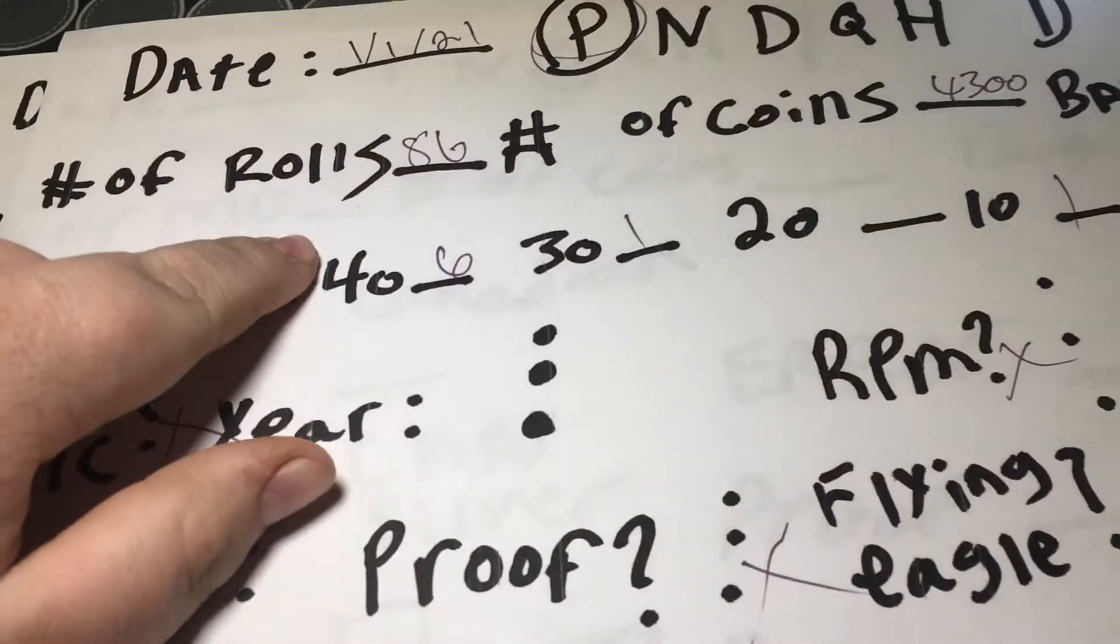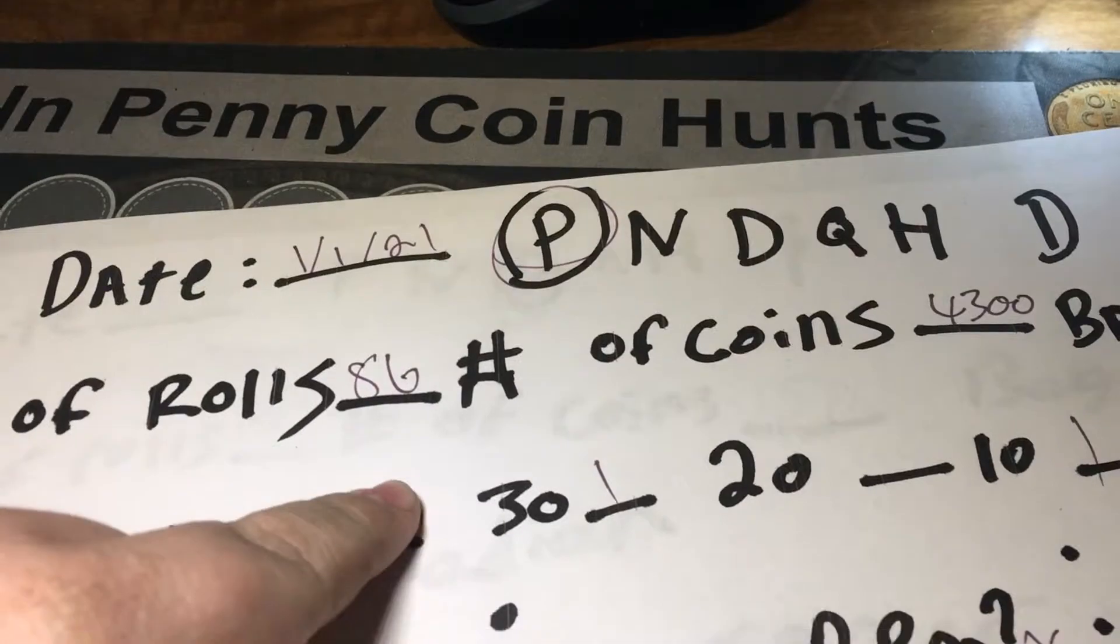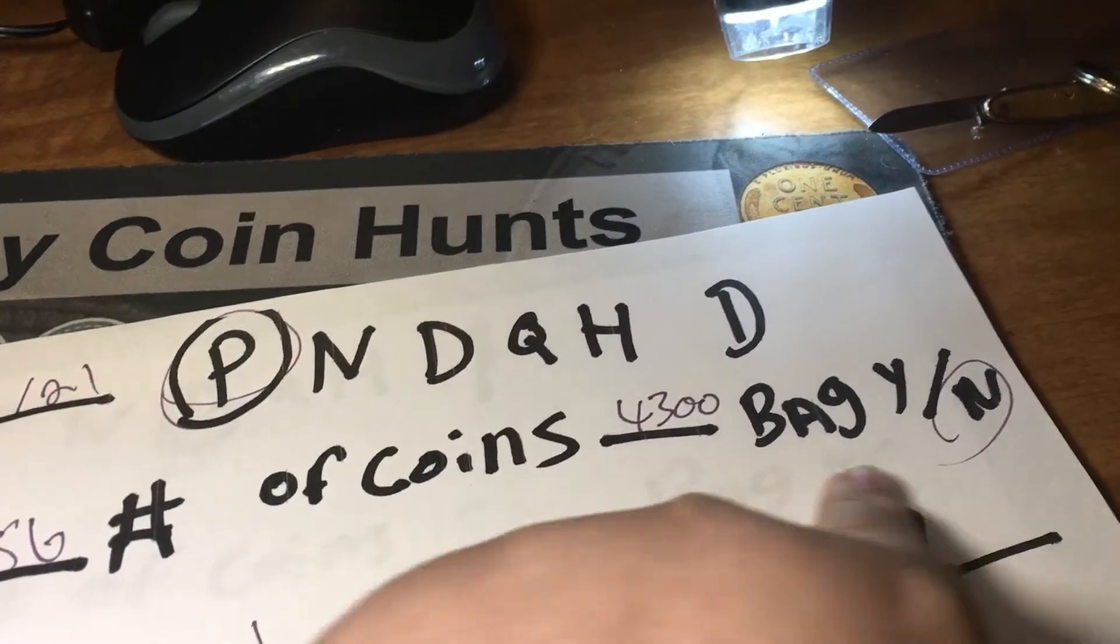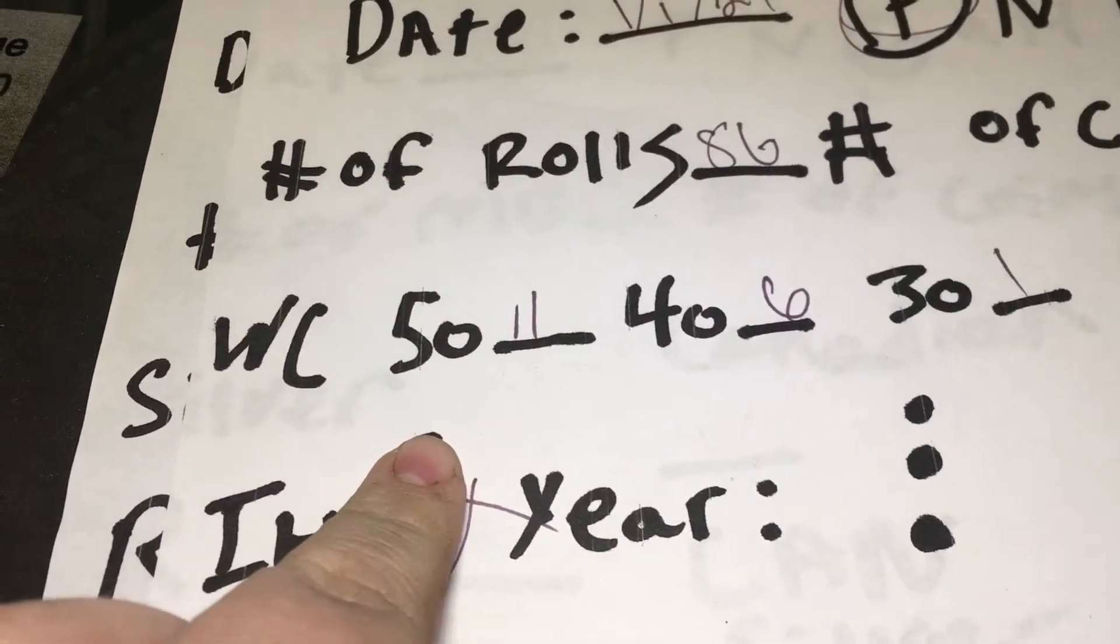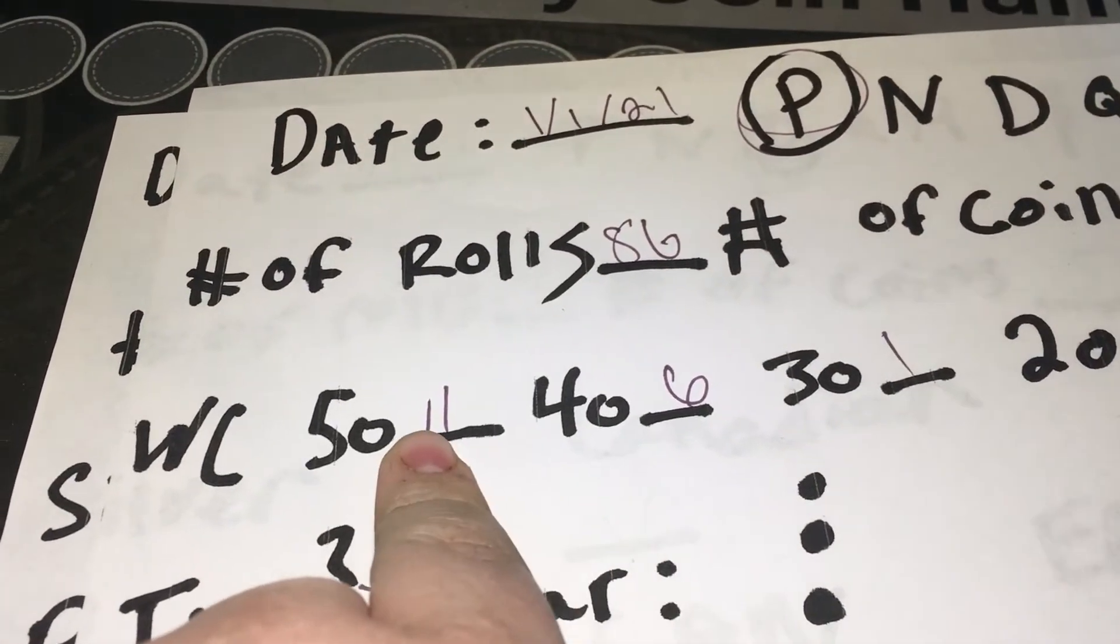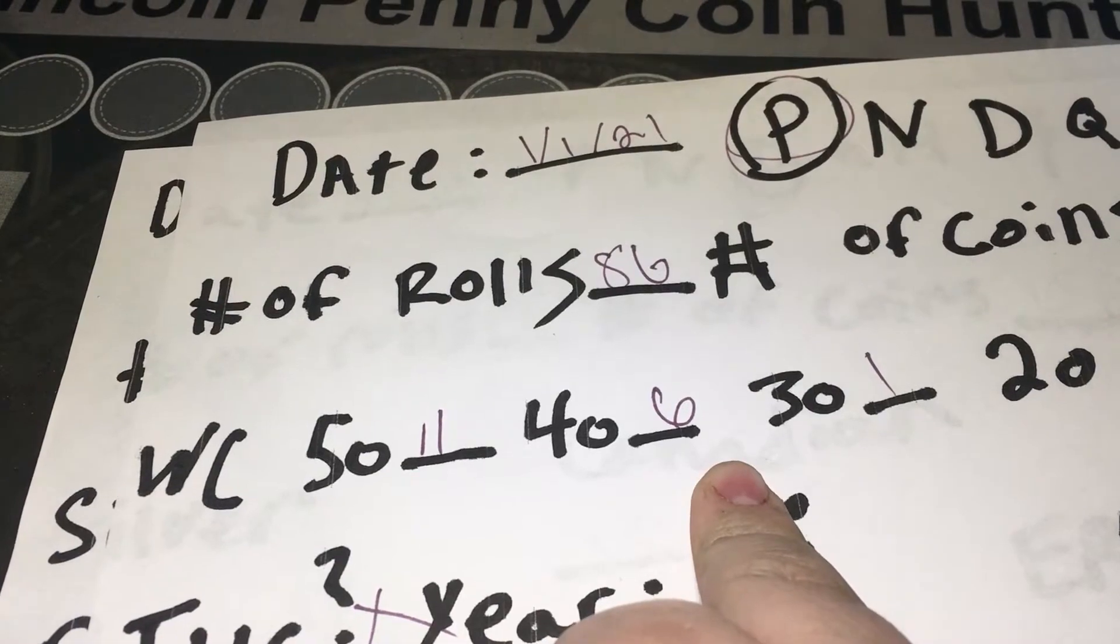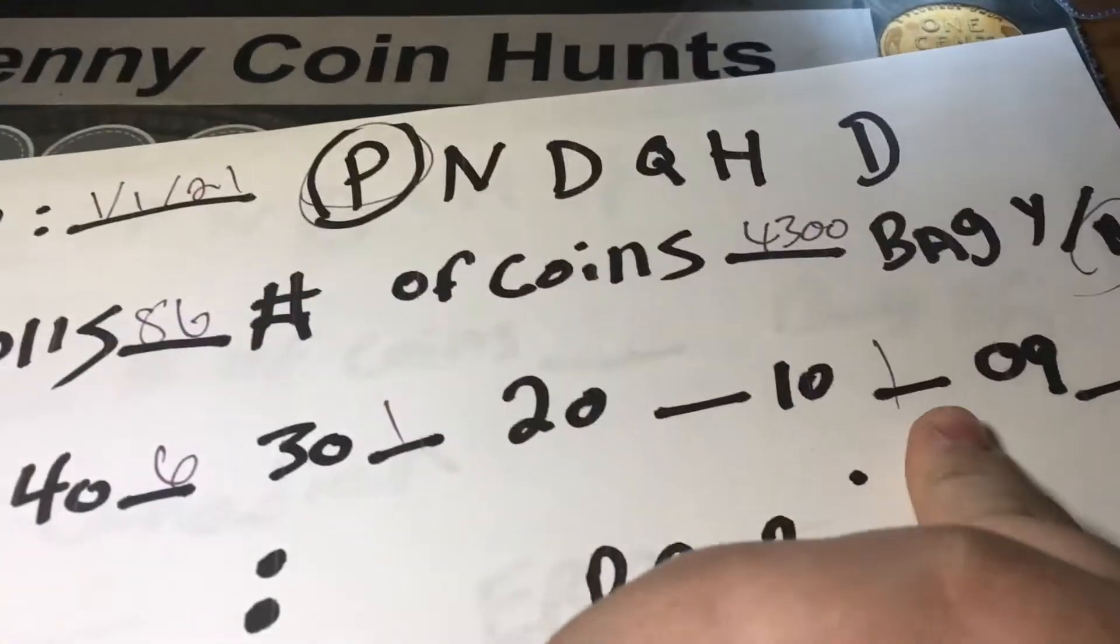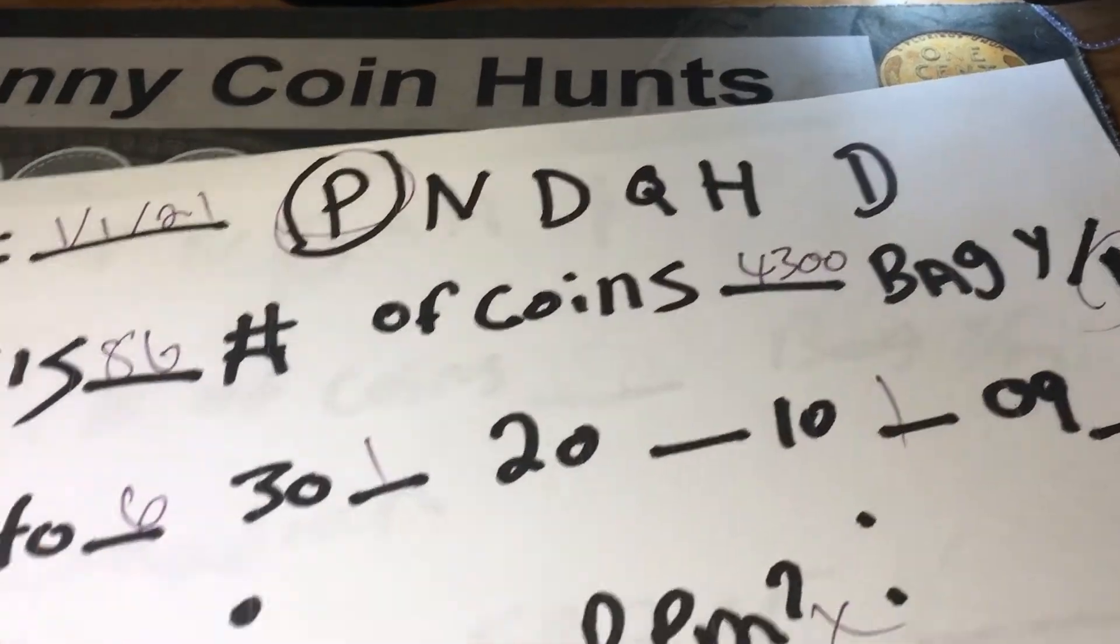1-1-21. For pennies, we went through 86 rolls, 4,300 coins, not a bag, and found 11 50s wheat cents, 6 40s wheat cents, a 30s wheat cent, and a 1918, so that's the teens.